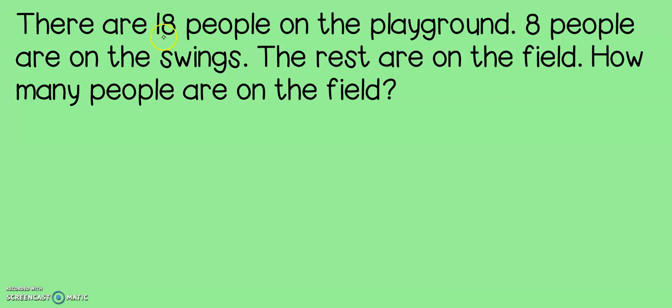There are 18 people on the playground. Eight people are on the swings. The rest are on the field. How many people are on the field? Now, let's think about what we know. I know that there are 18 people on the playground. That is my total number of people. So, if I was going to put this on a math mountain, 18 would be at the top because that is my total.